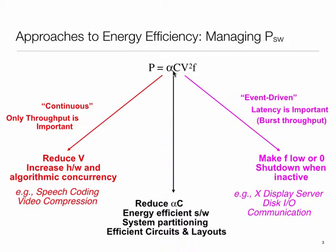The second thing we can do is reduce the alpha-C term. Capacitance says something about the quality of the hardware, and alpha says how much that capacitance is being switched — something about the quality of your architecture or algorithms. Some algorithms may require more instructions, more switching of nodes in hardware. All of this really boils down to energy-efficient implementation, hardware, algorithms, and operating system. This is more of a design-type trick.